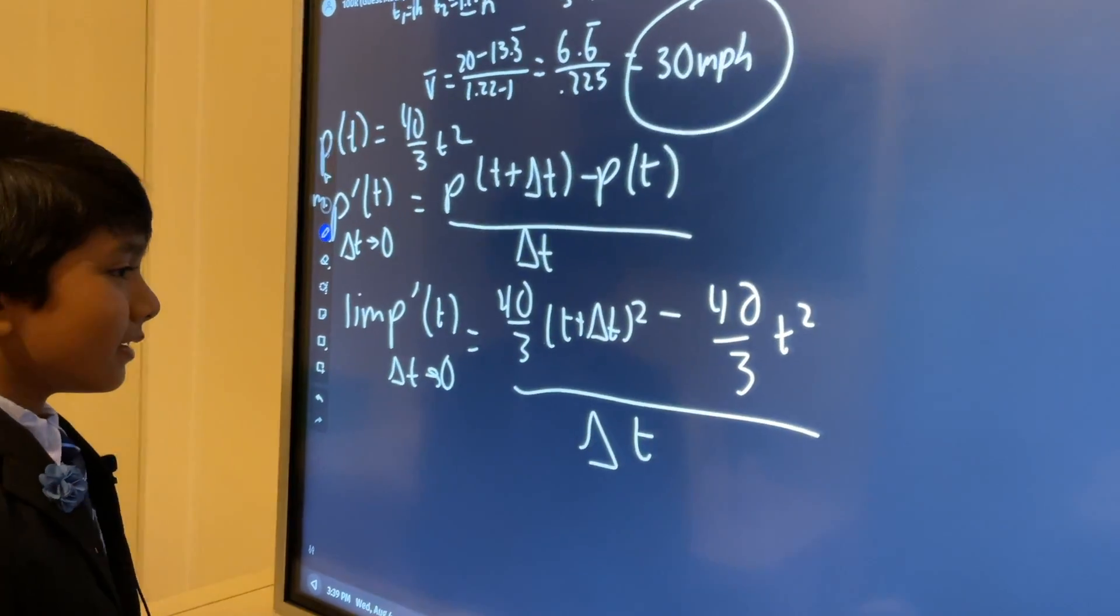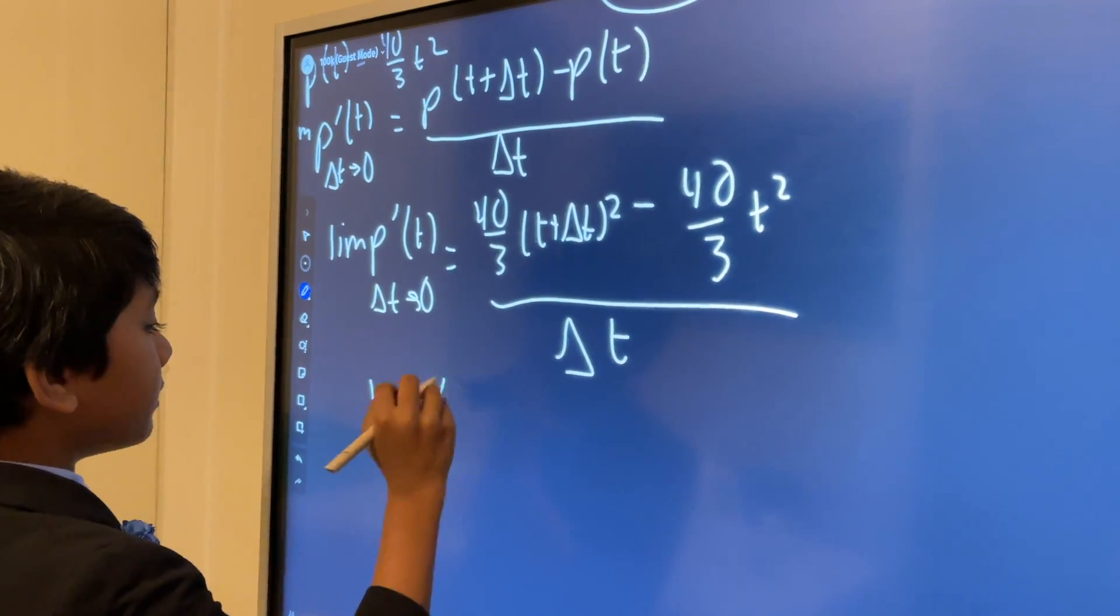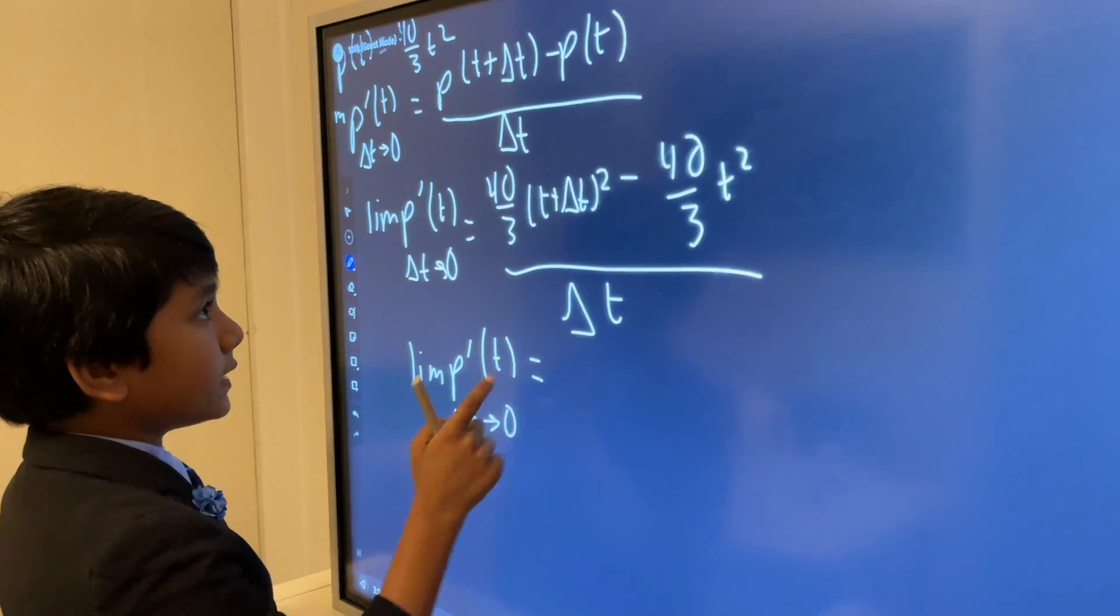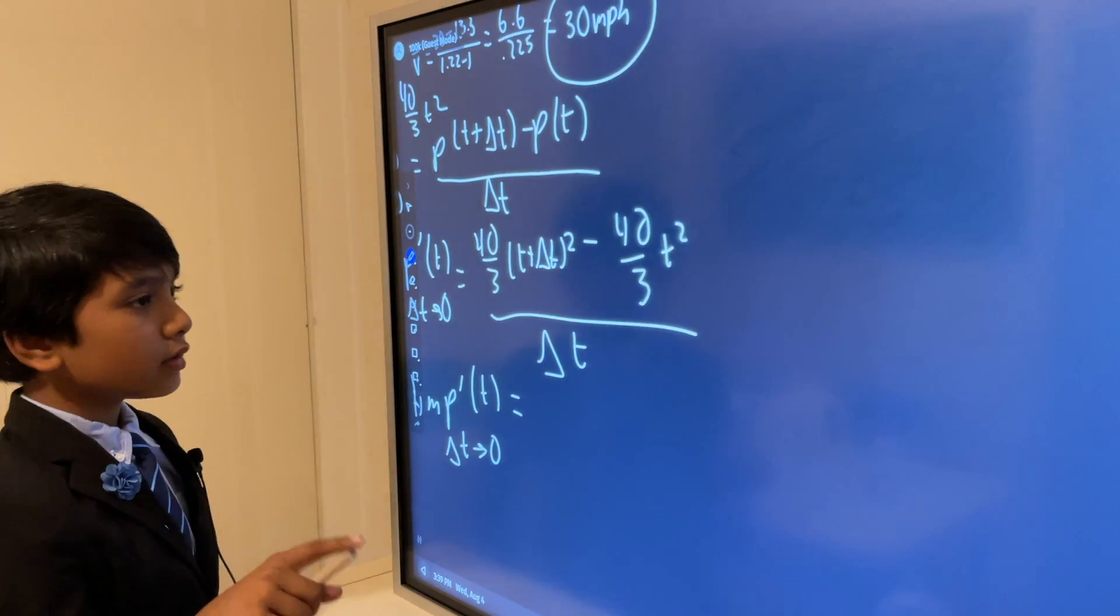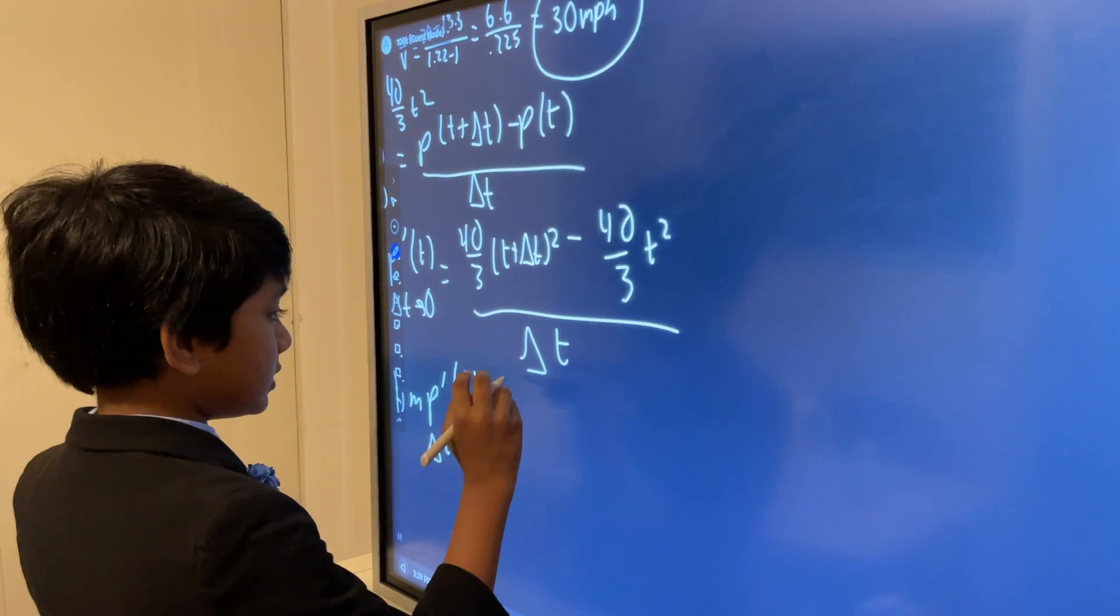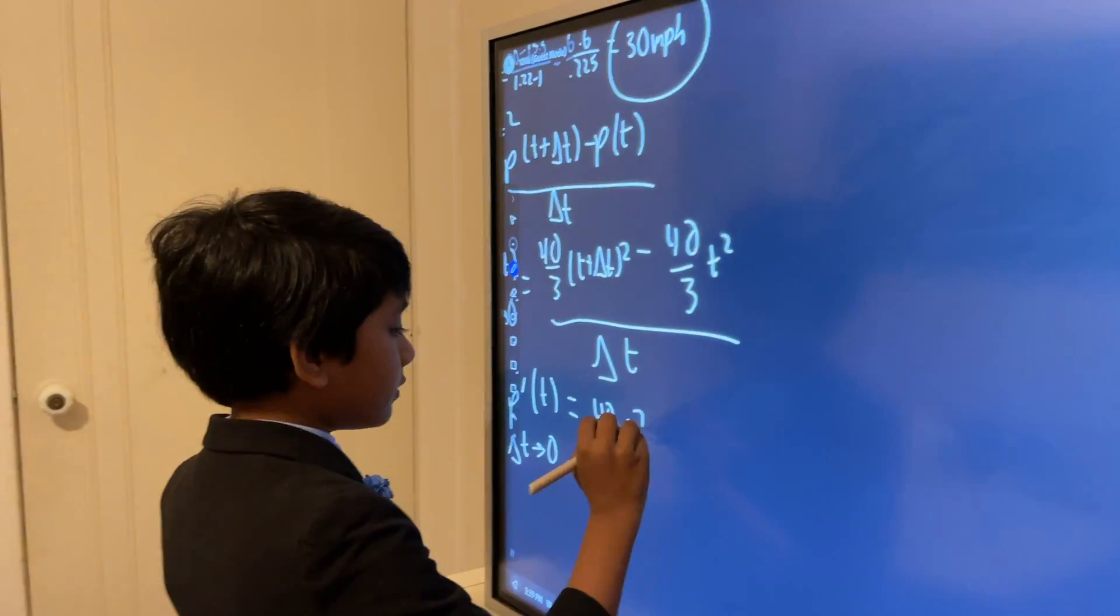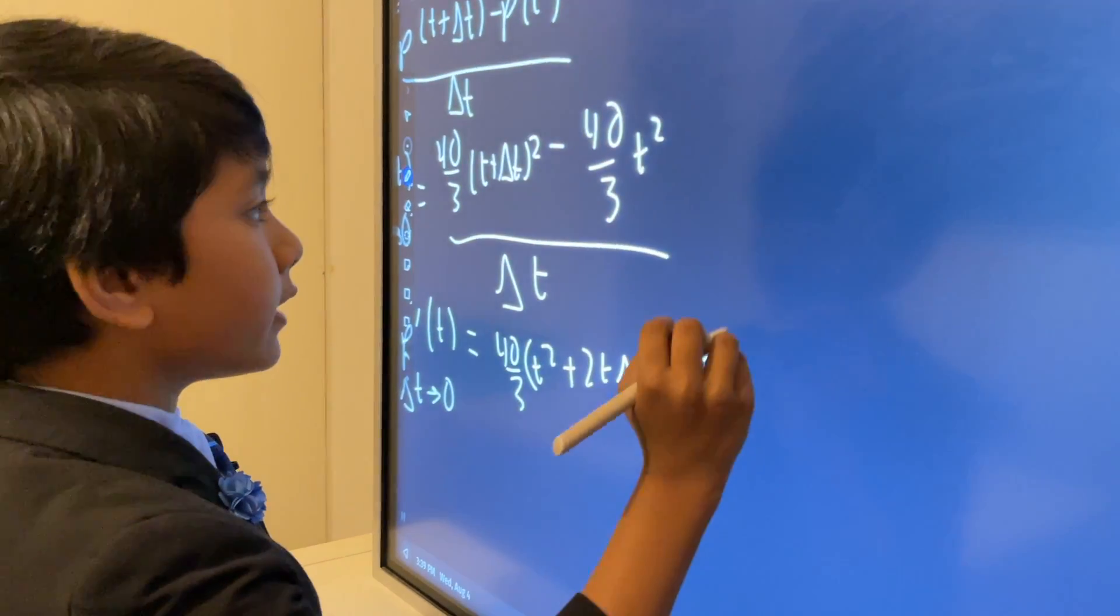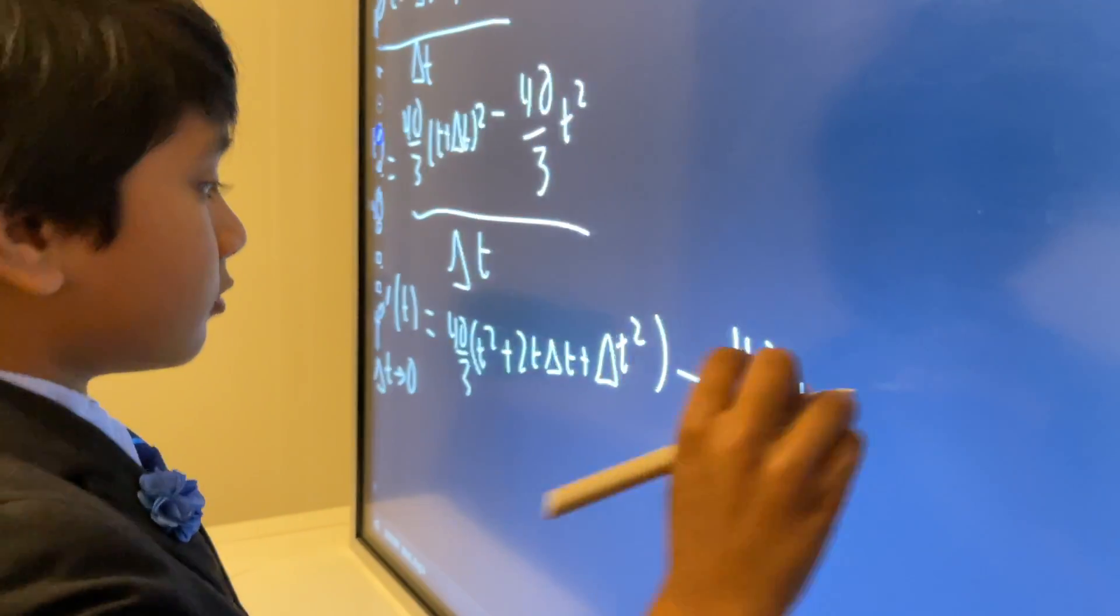Alright. Now, we will go to limit as delta t approaches zero. So, 40 over 3 t plus delta t whole squared minus 40 over 3 t squared over delta t. So, what I'll do is now I'll expand. So, 40 over 3 times t squared plus 2t delta t plus delta t squared minus 40 over 3 t squared.